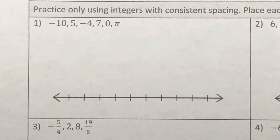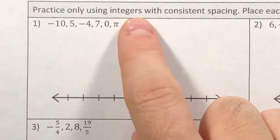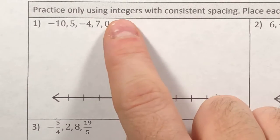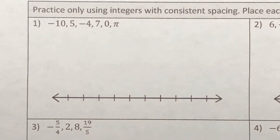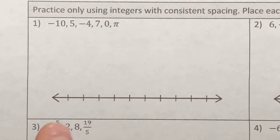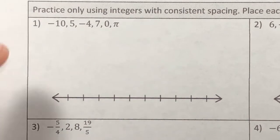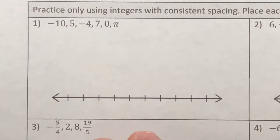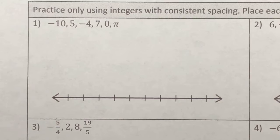The first thing we're going to do is place all of these on the number line with integer spacing — integers with consistent spacing. That means I'm going to have to put integers on here like negative 10, negative 9, negative 8, negative 7, and I can't skip. Whether I'm counting by 2s, 3s, or 10s, it's got to be the same. To make my life as easy as possible, I'm going to try and count by as few as possible, which means I need to find the lowest number and the highest number.